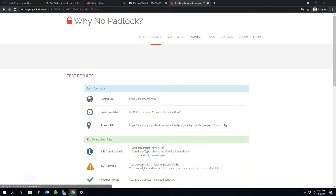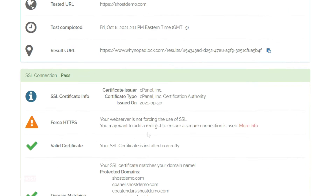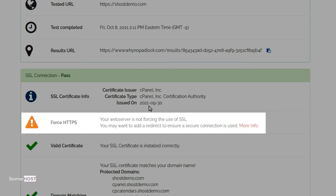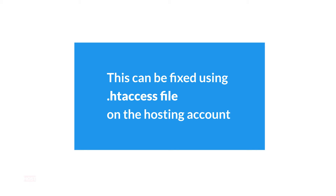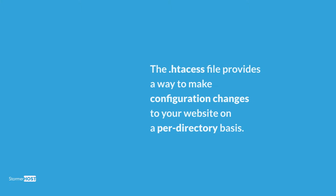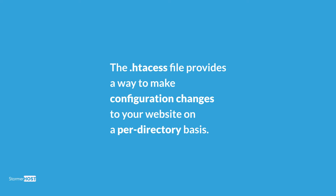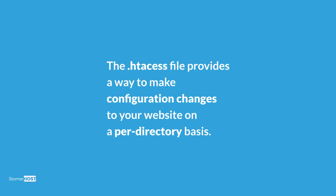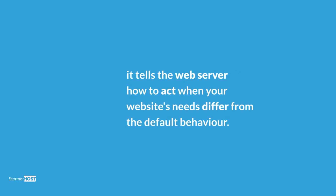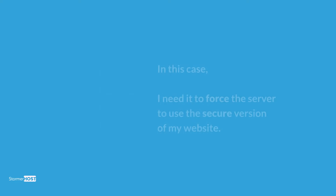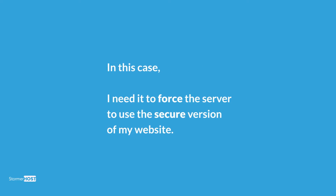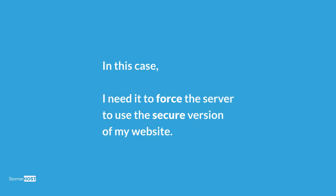From the test results, we can confirm our SSL has been issued by cPanel, but HTTPS has not been forced for my website address, hence the not secure sign. This can be fixed using the .htaccess file on the hosting account. The .htaccess file provides a way to make configuration changes to your website on a per-directory basis. It tells the web server how to act when your website needs differ from the default behavior. In this case, I need it to force the server to use the secure version of my website.